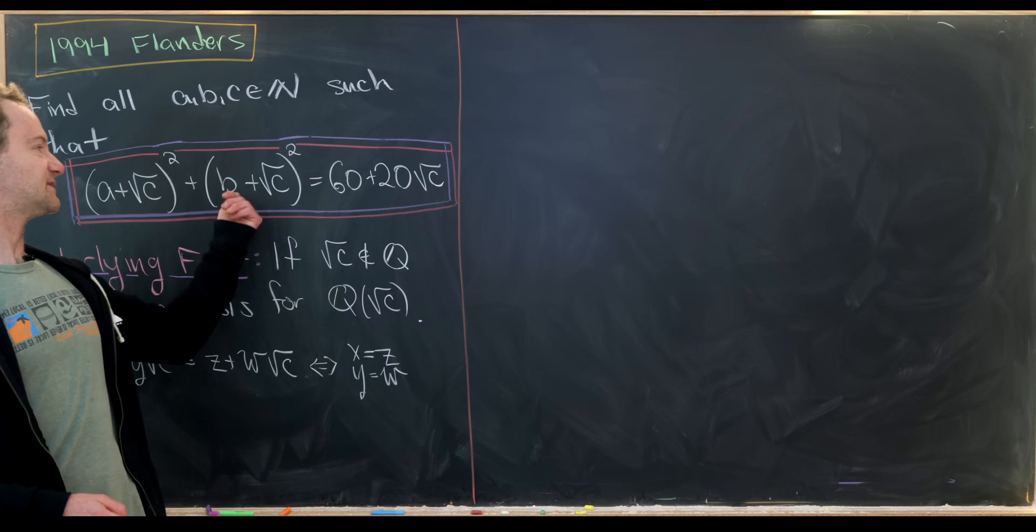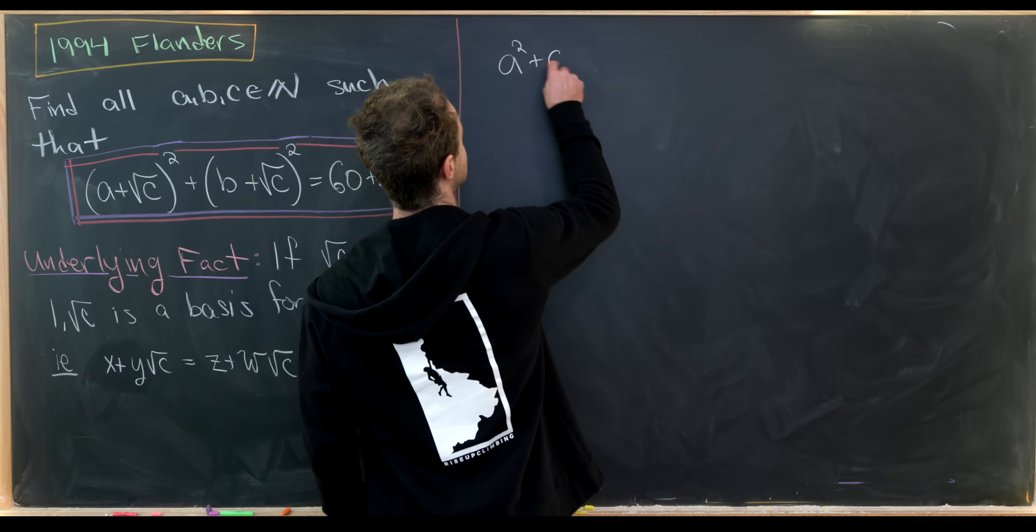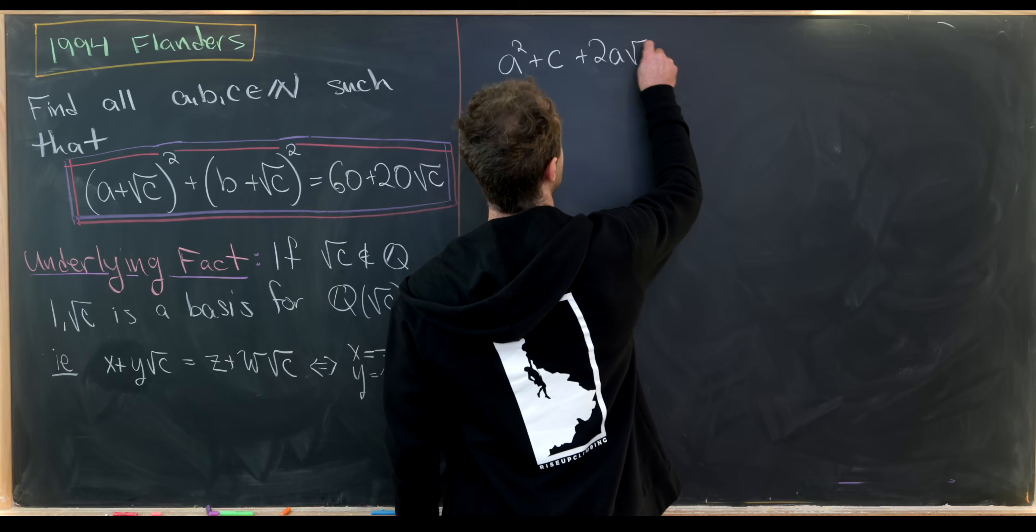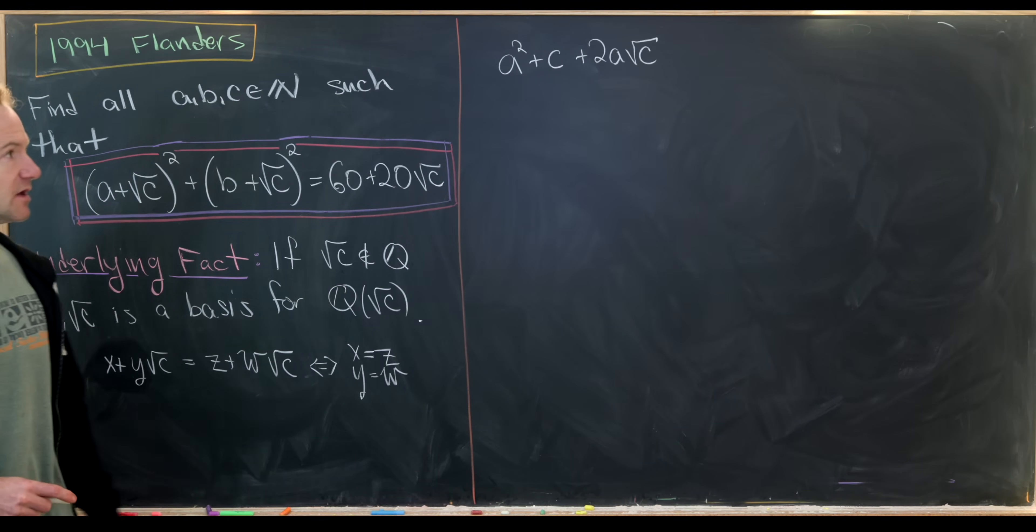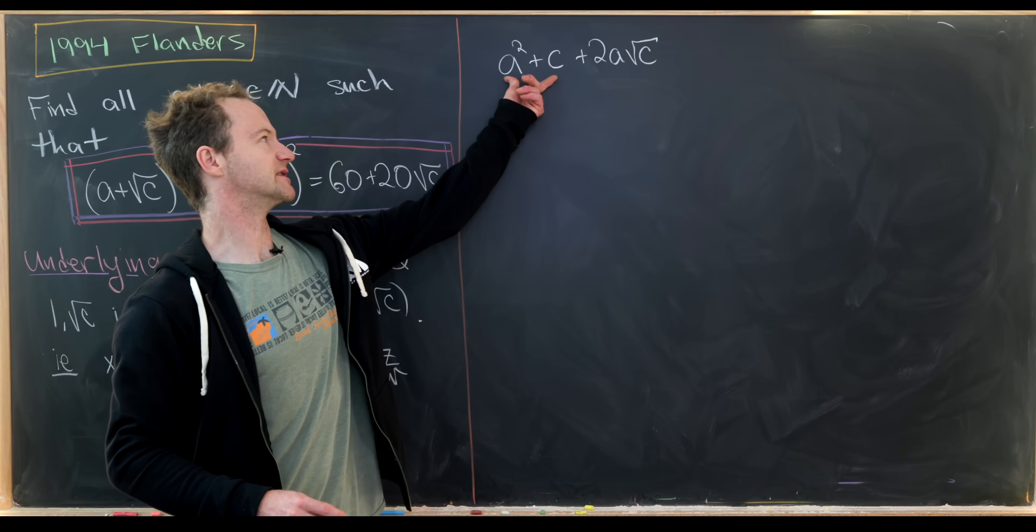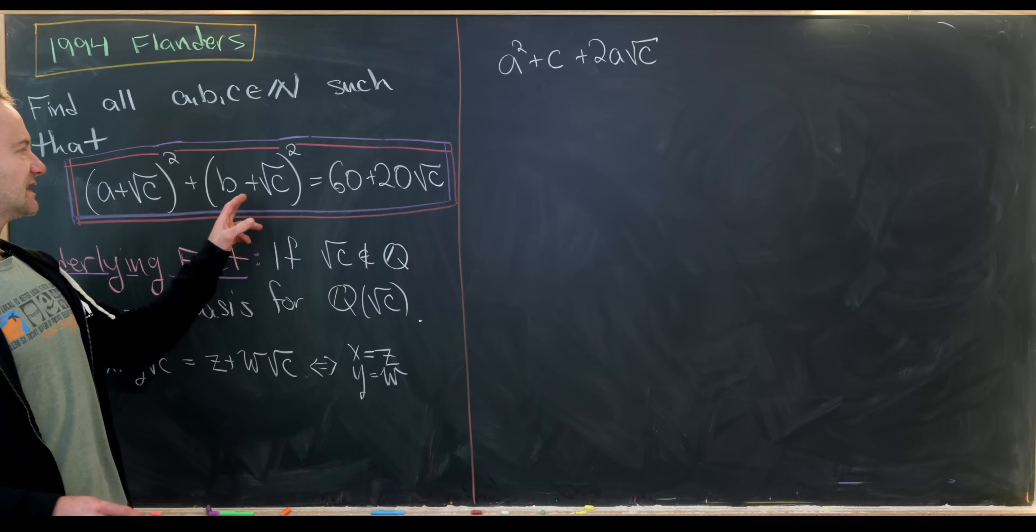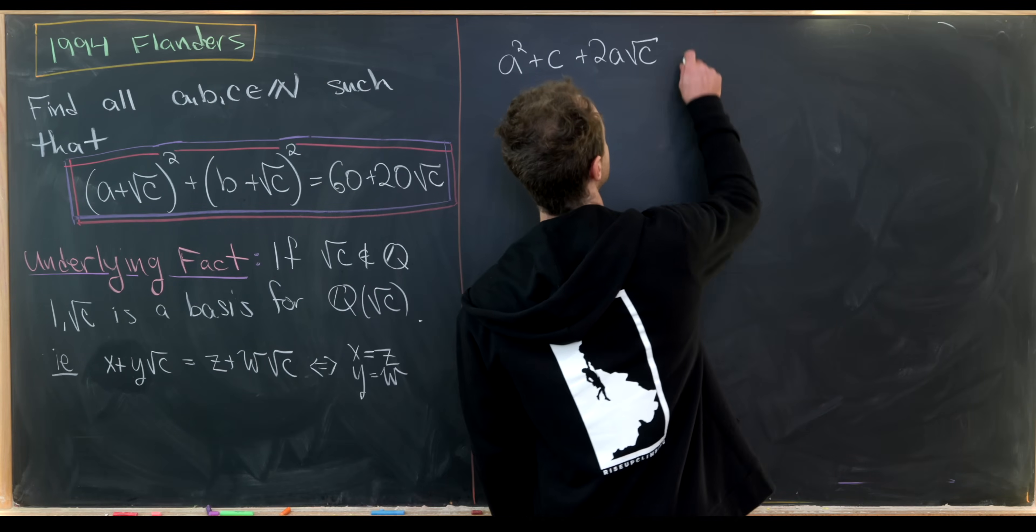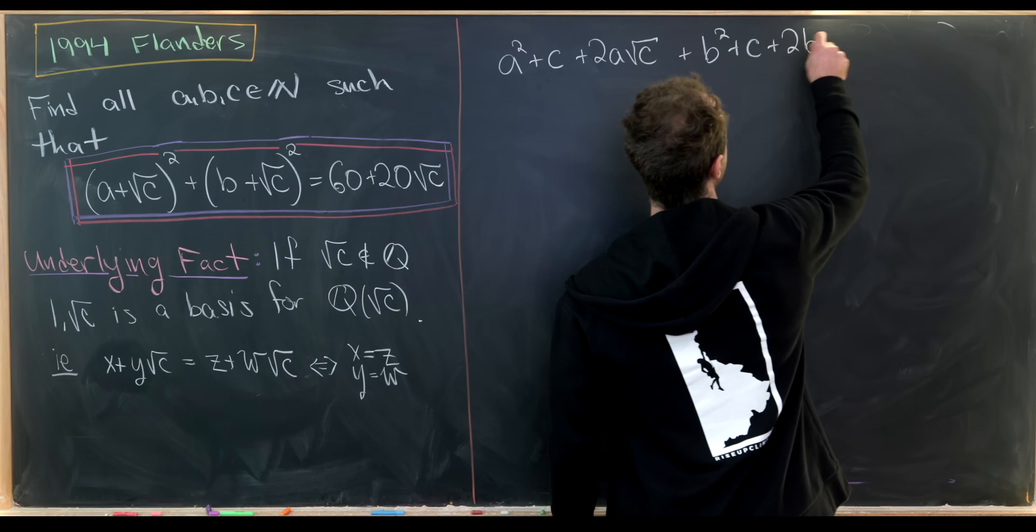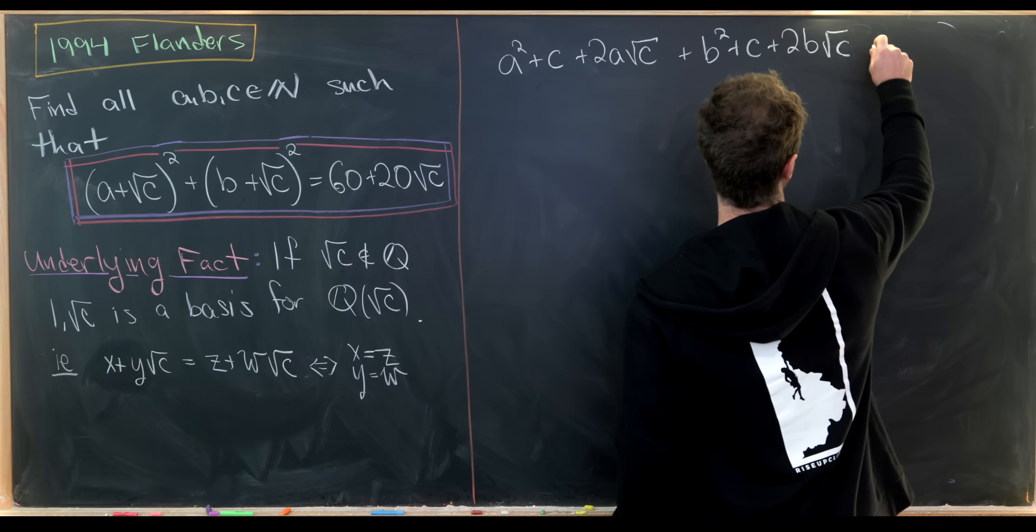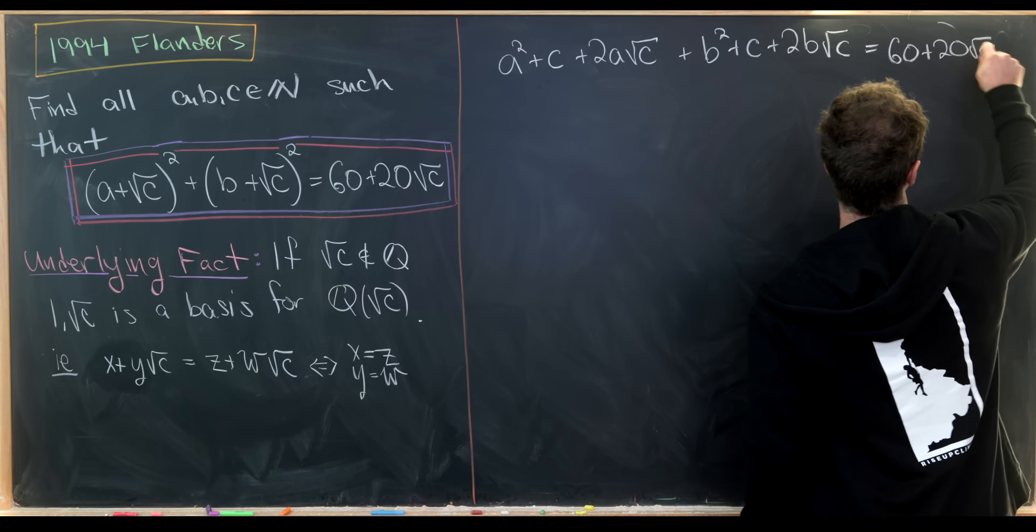Okay. So we'll start by expanding out this left-hand side. That'll leave me with a squared plus c plus 2a times the square root of c. I wrote it in a slightly non-standard order for squaring a binomial, but notice I've put everything that is a natural number to the left. Now I'll do something similar for this b plus root c term. That'll give me b squared plus c plus 2b times the square root of c. Then we have this is equal to 60 plus 20 root c.